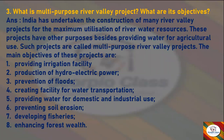India has undertaken the construction of many river valley projects for the maximum utilization of river water resources. These projects have purposes besides providing water for agricultural use — such projects are called multi-purpose river valley projects. Their main objectives are: providing irrigation, production of hydroelectric power, prevention of floods, water transportation, water for domestic and industrial use, preventing soil erosion, developing fisheries, and enhancing forest wealth.